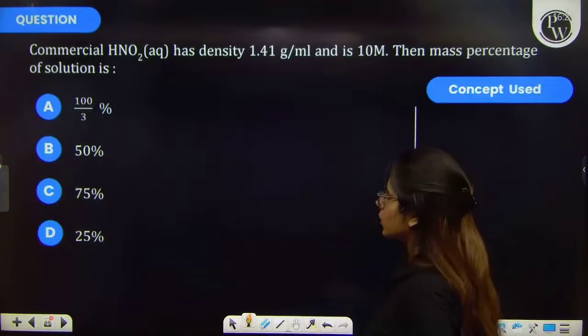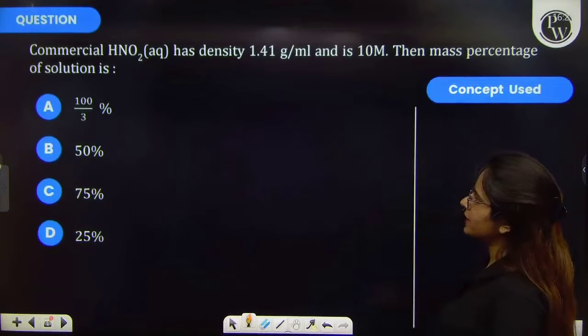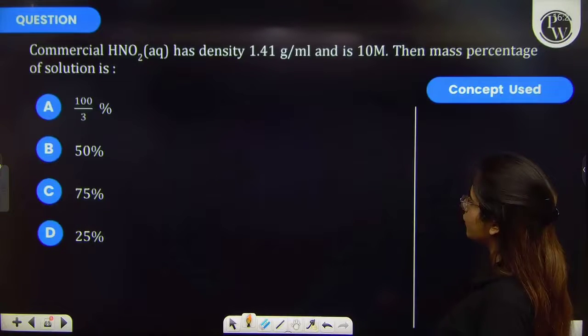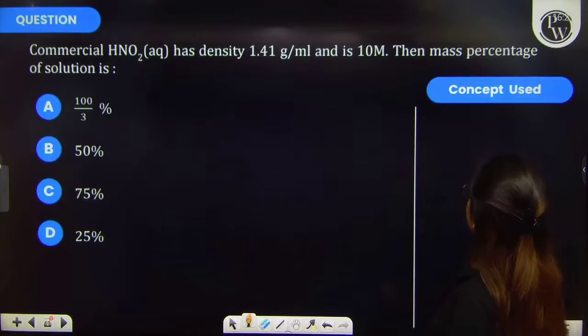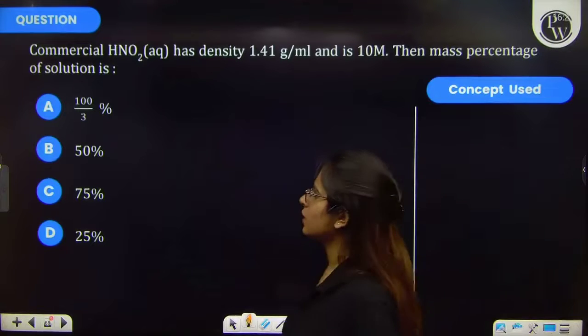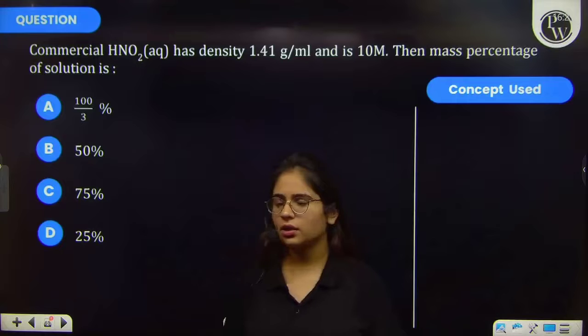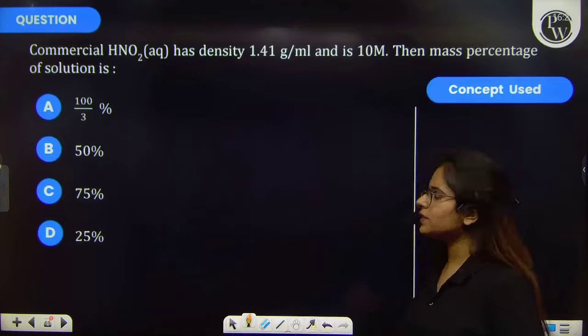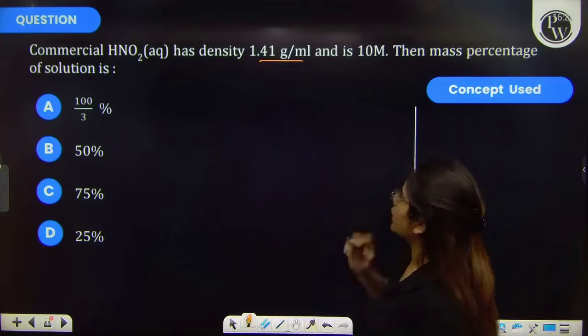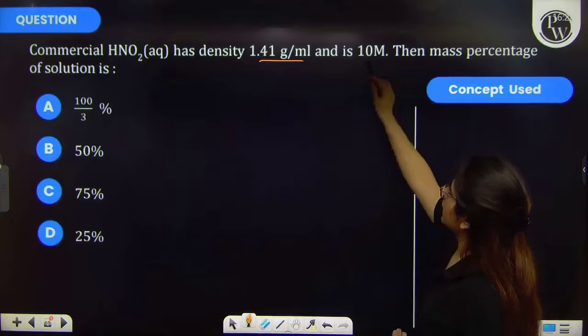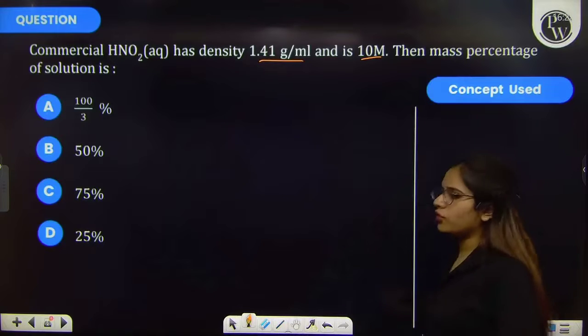Let's see this question. The question says that commercial HNO2 aqueous has density 1.41 gram per ml and is 10 molar. Then mass percentage of the solution is. So in question you have been provided the HNO2 aqueous solution, density 1.41 gram per ml, molarity 10 molar, and you have to find the mass percentage.